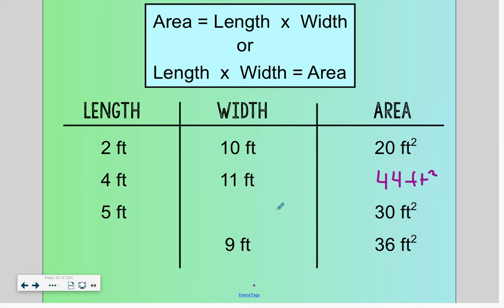If our length is five and we know our area, we would need to use division, thinking about five times what number is going to give us 30, or 30 divided by 5 is 6 feet.